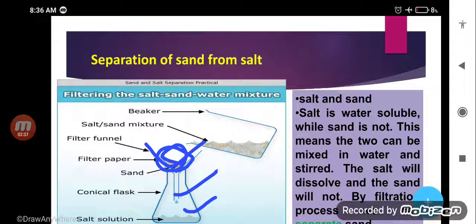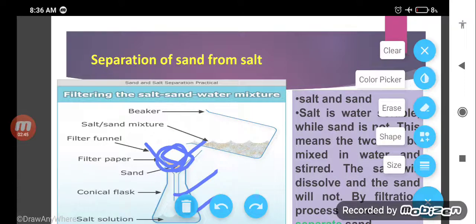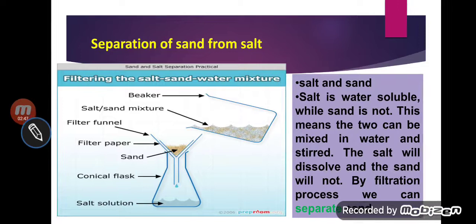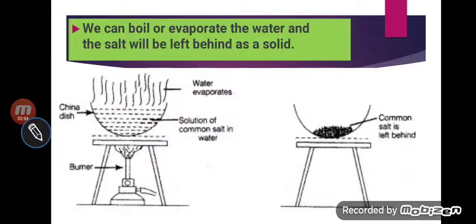We get the filtrate, which contains salt. So this is the second process — by the filtration process, we can separate sand from the mixture of salt and water. The last process is that we can boil or evaporate the water, and salt will be left behind as a solid. That is the third process — we can separate salt from water with the help of evaporation.